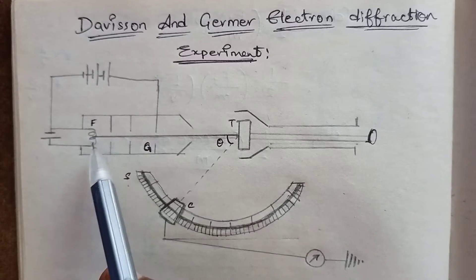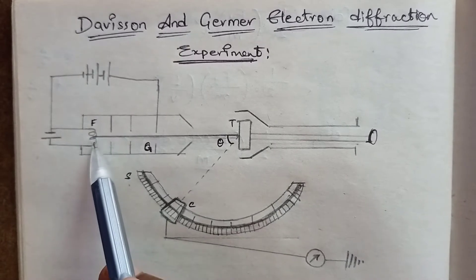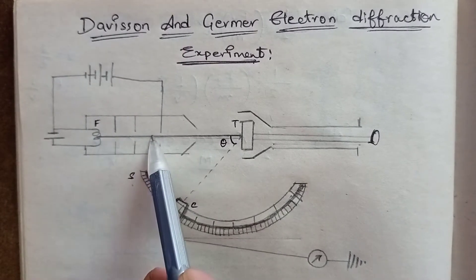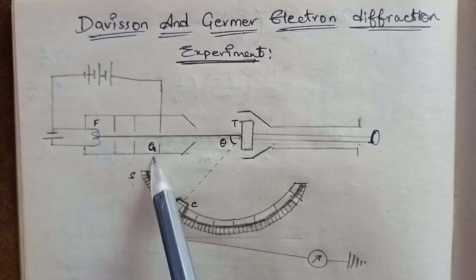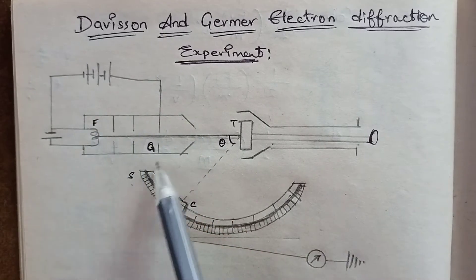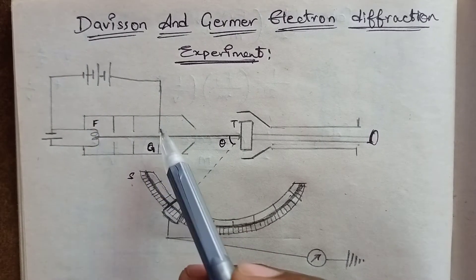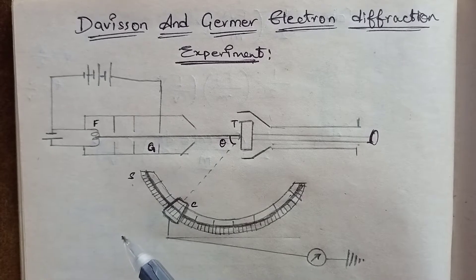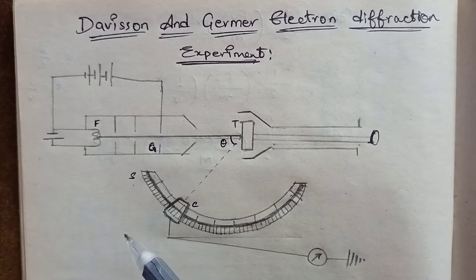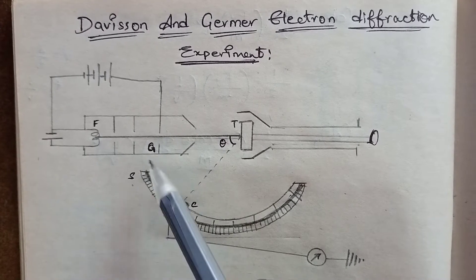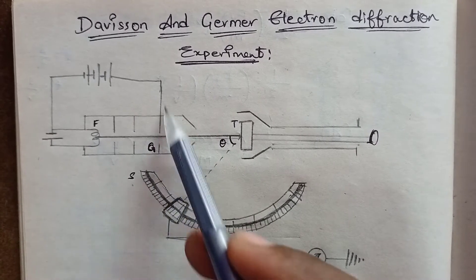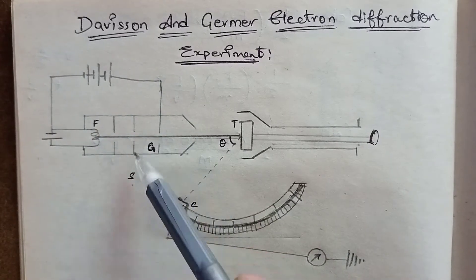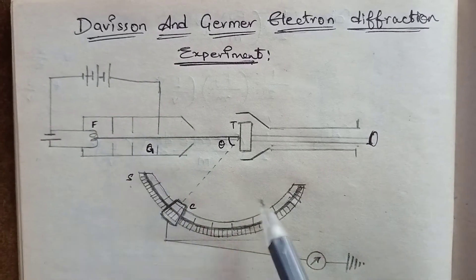Let's start with the filament. The filament produces electrons. This setup is called a gun — specifically, an electron gun — which produces electrons like bullets.